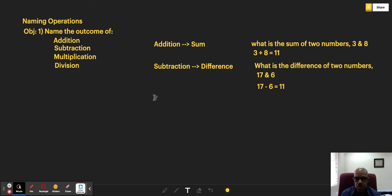The next one is multiplication. The outcome of multiplication is called the product. In practice, you might get a question like, what is the product of two numbers?